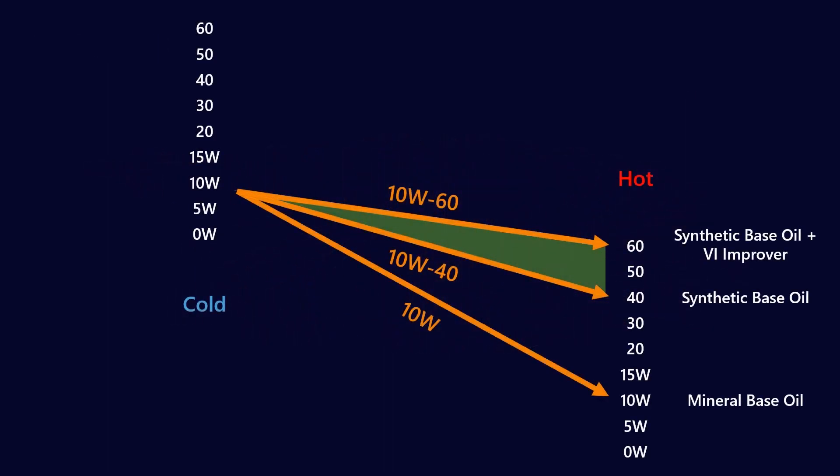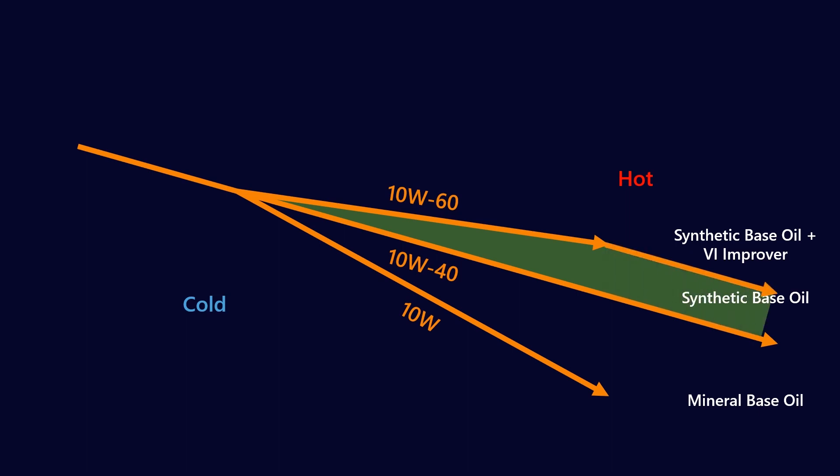How would that look on our graph? Imagine that I'm going to extend the base oil lines out a little bit further. This is the synthetic base oil line, this theoretical synthetic 10W40. The difference between 10W40 and 10W60 is the contribution of the VI improvers. At lower temperatures, beyond where the VI is effective, all the performance is dictated by the base oil. But at higher temperatures, because the VI improvers can't expand anymore, the line will track with the base oil line.